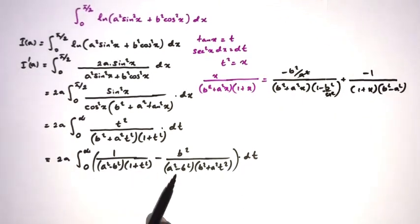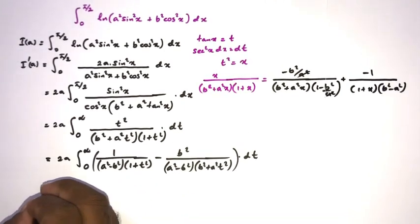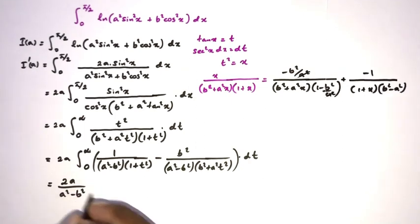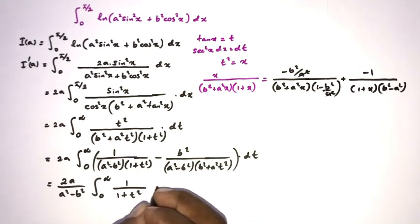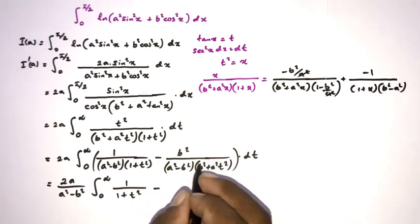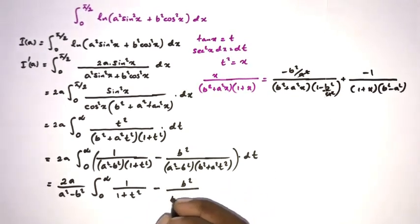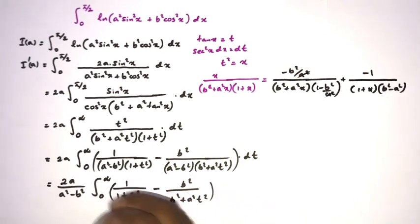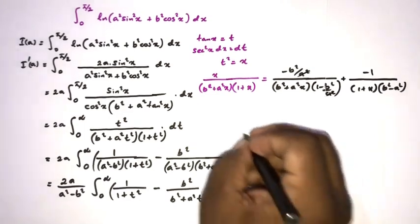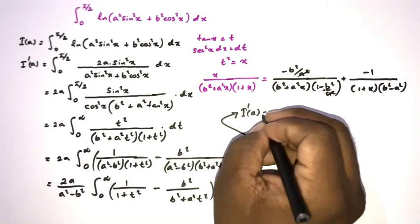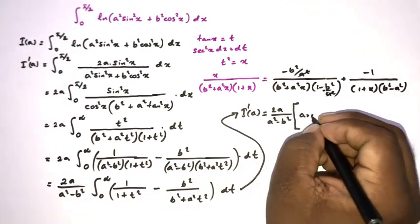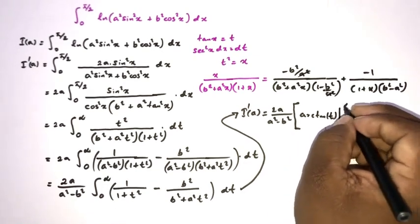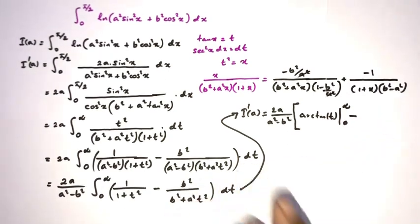Both integrals are arctangent integrals. We write I'(a) = 2a/(a² - b²) times [arctan(t) from 0 to ∞ minus b² · (1/(a·b))·arctan(at/b) from 0 to ∞].